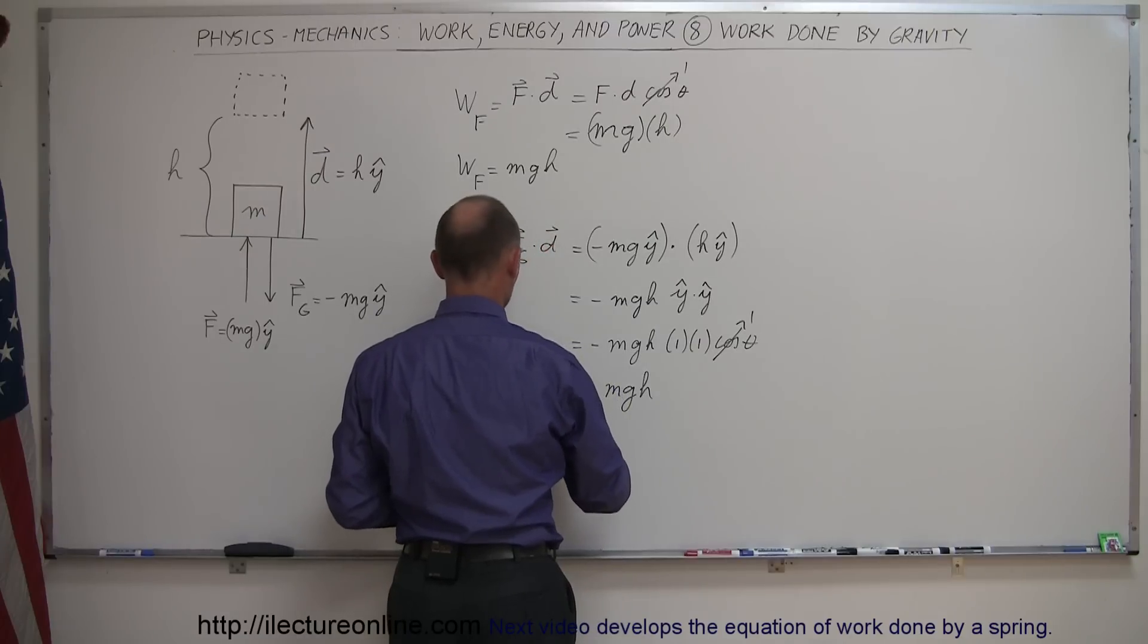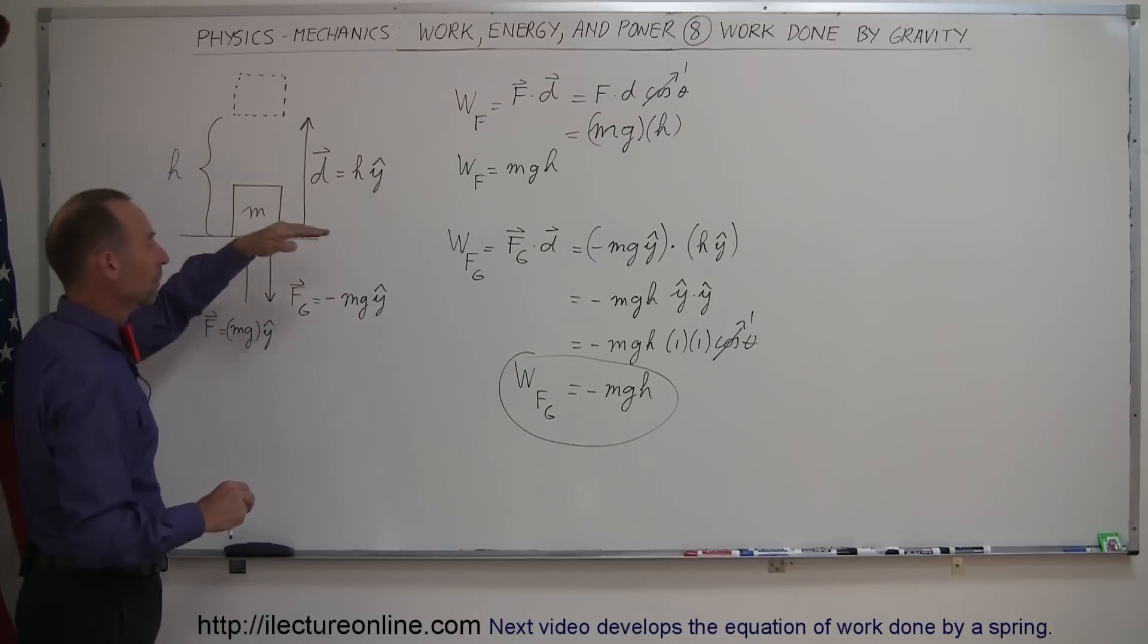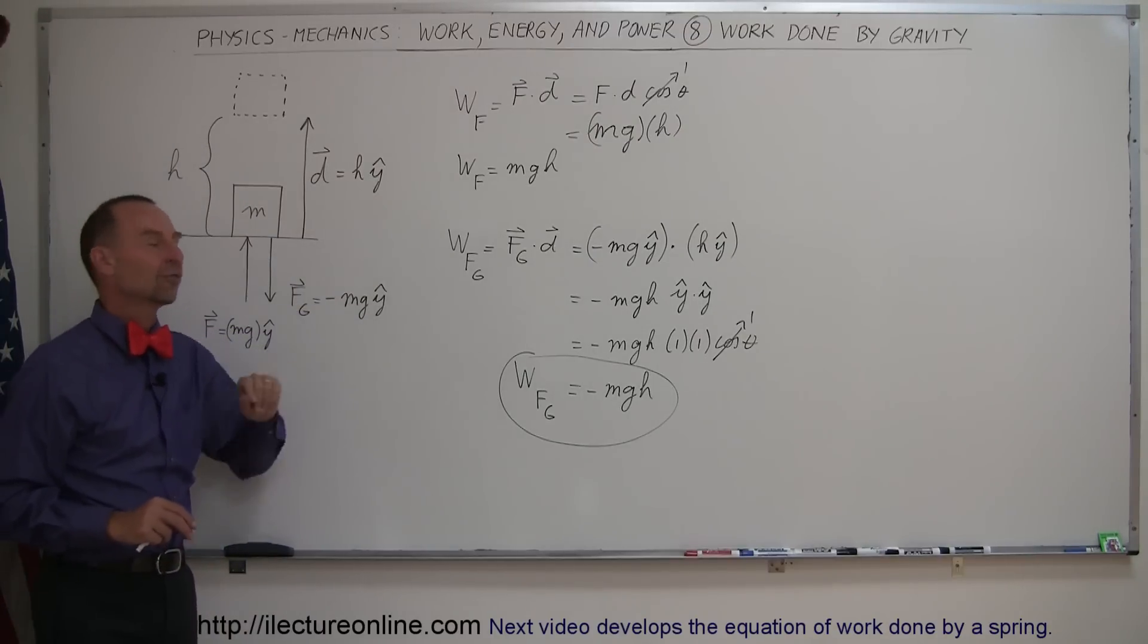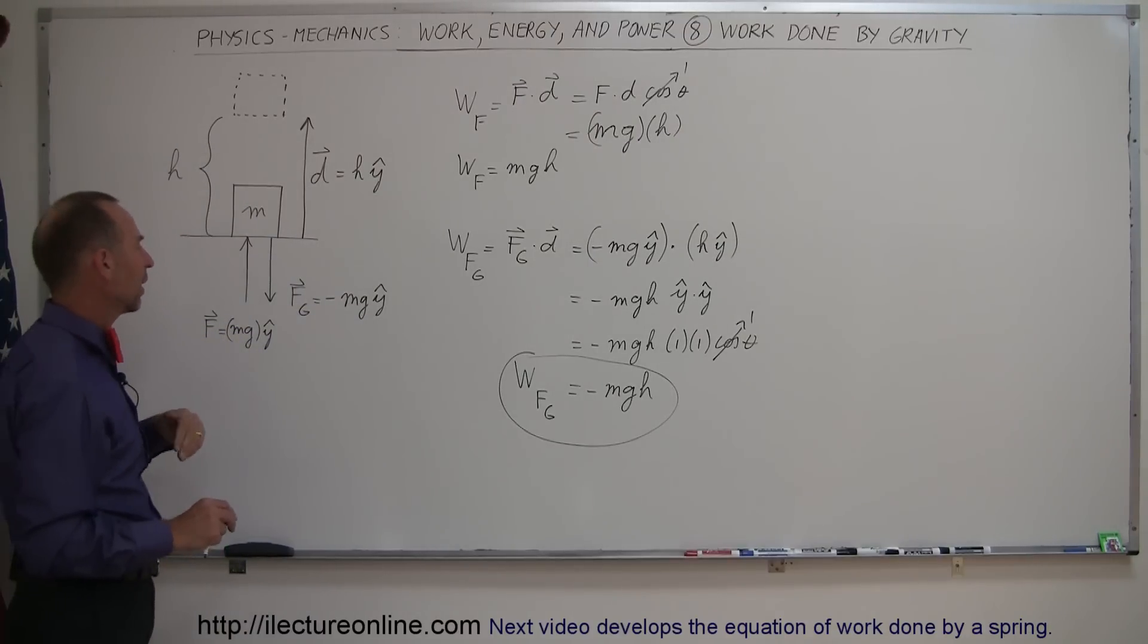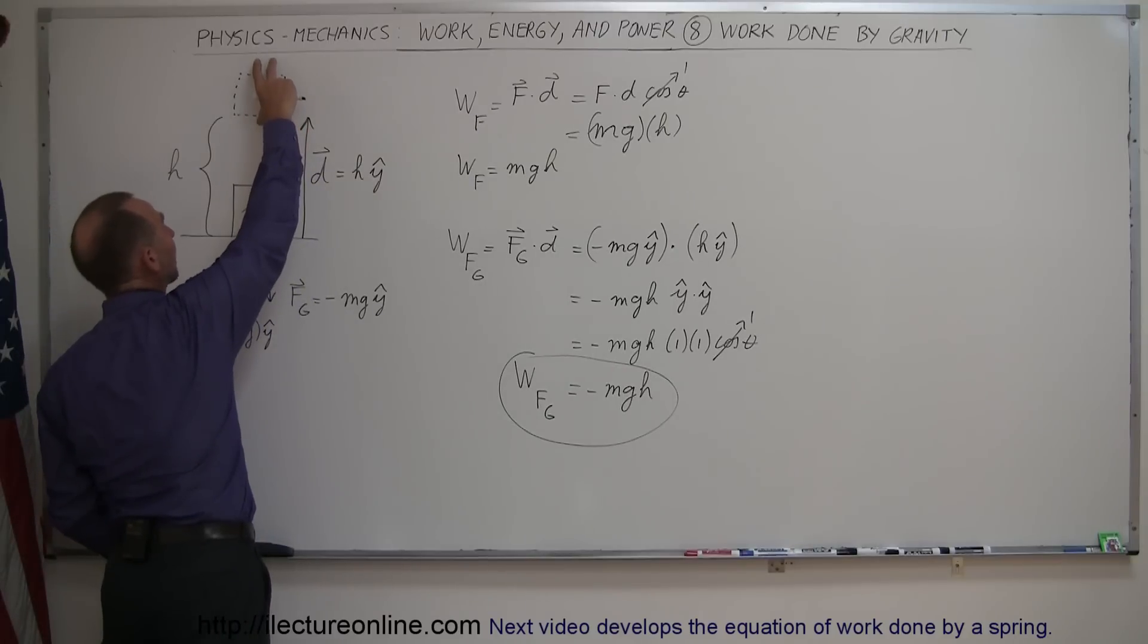So the work done by the force of gravity is equal in magnitude to the work done by the force that pushes it up, but it's a negative quantity. That's because the force of gravity is pointing downward, and the block is going up.